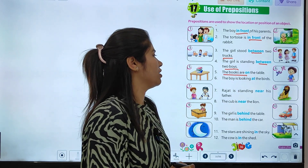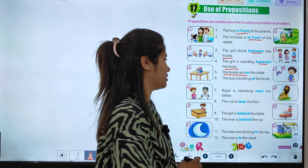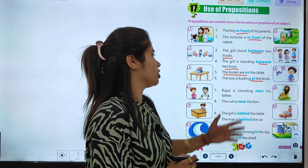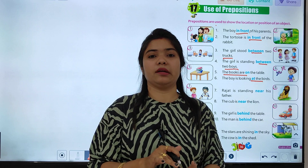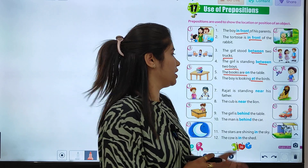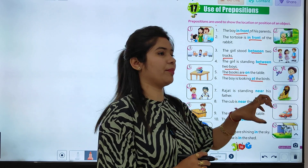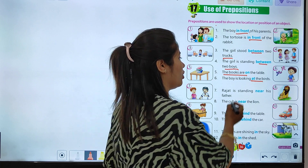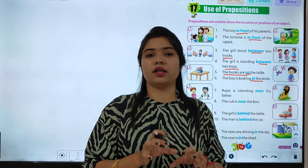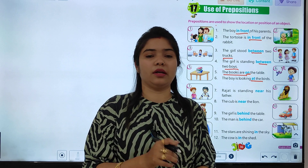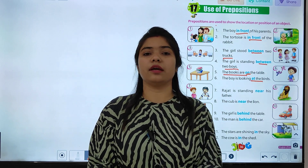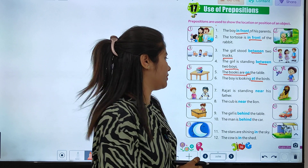The books are on the table. Toh books kahan hai? Table par hai. Toh yeh kya bata raha hai? Iski location ko bata raha hai. Toh 'on' prepositions hame kya bata raha hai ki books kahan par hai — table par hai. Toh 'on' jo hai, yeh ek location indicate kar raha hai.